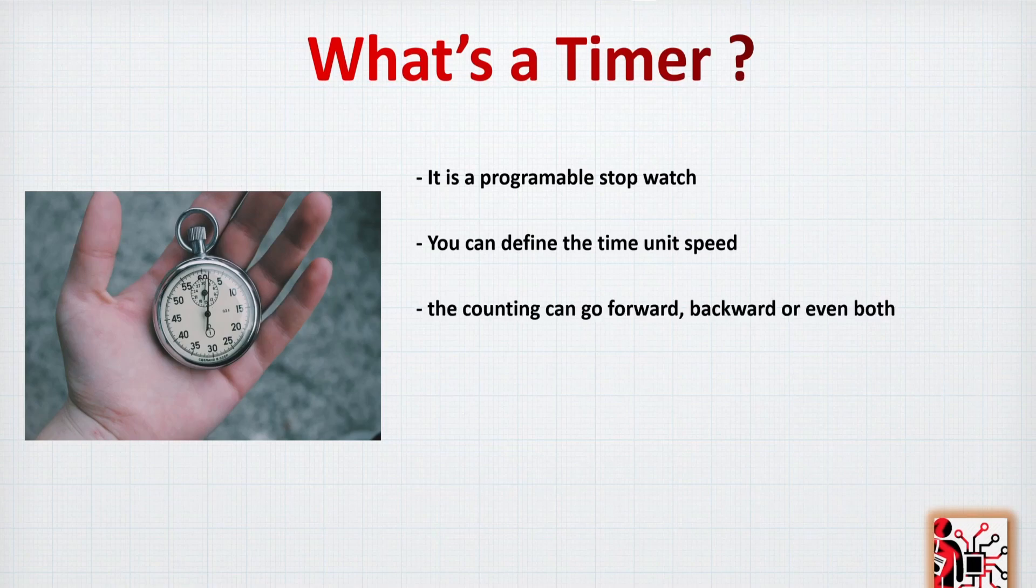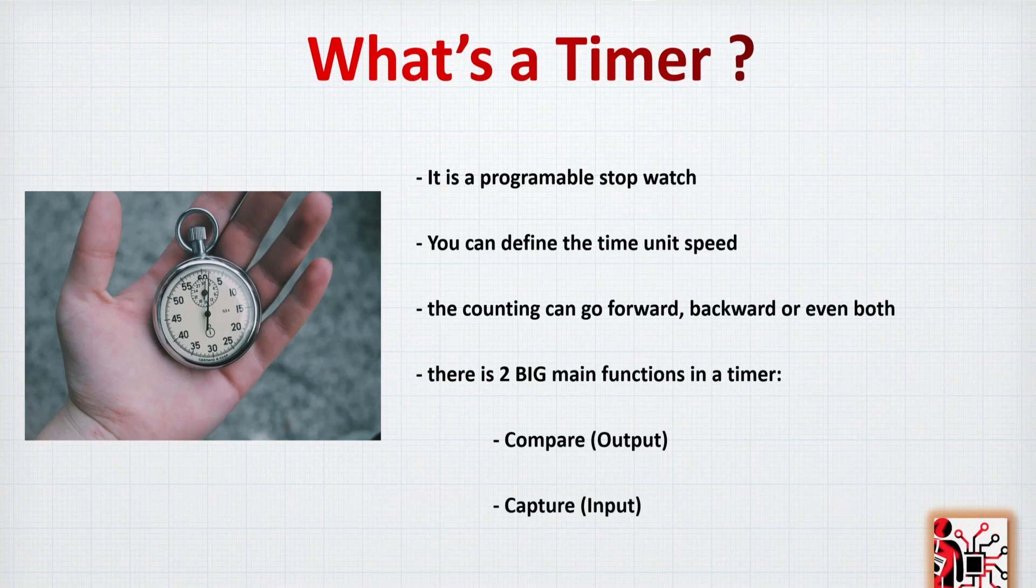Also, within these timers, you can count forward, backward, or even both. So you can start 1, 2, 3, up to a certain number, and then go backward. It depends on how you would like to set up your timer. And there are two big main functions in a timer. I already started introducing them when I showed the videos. Here is the first one, the compare, which is related to the output. And after that, the capture, which is the input.